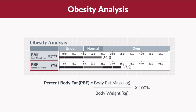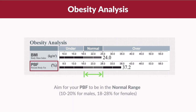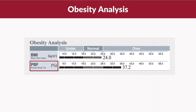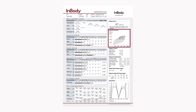Percent body fat is the ratio of your body fat mass divided by your weight, and it is advisable to aim for your percent body fat to be in the normal range. Other than knowing about your body fat mass, you can also know about your visceral fat area.